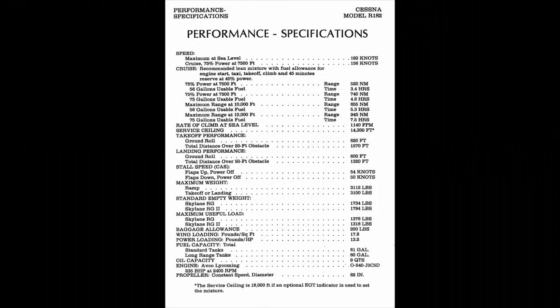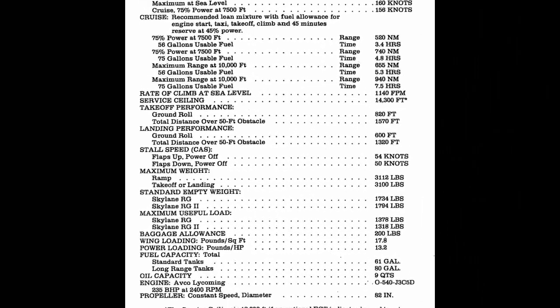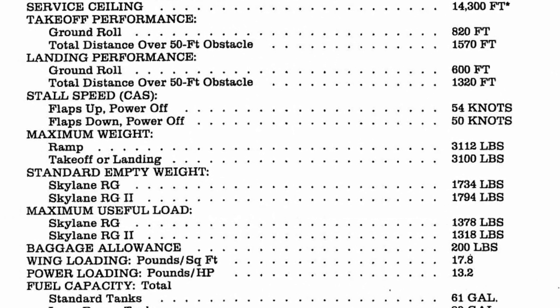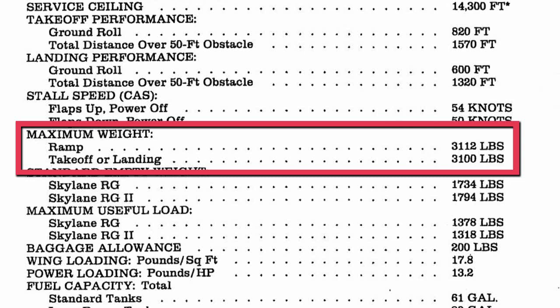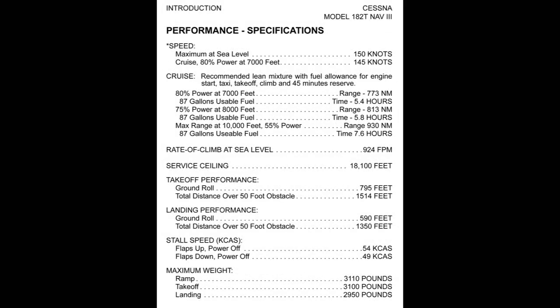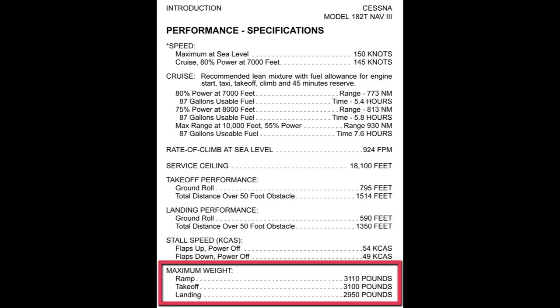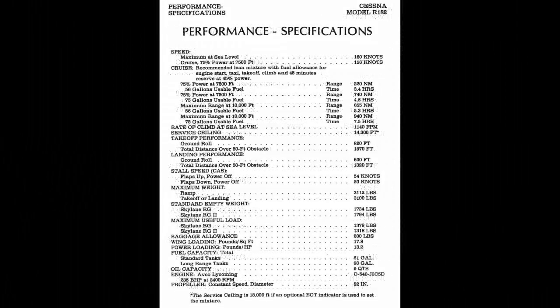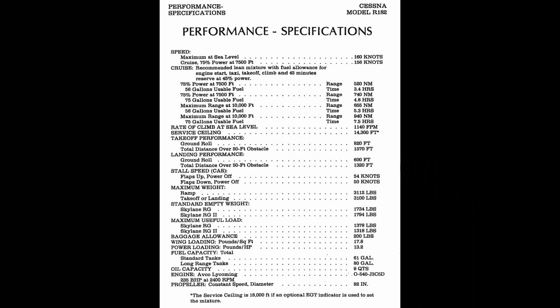One of the first few pages in the POH gives us the performance specifications. We're going to find out what the maximum takeoff weight is for the Cessna 182 RG. The maximum ramp weight is 3,112 pounds and the maximum takeoff or landing weight is 3,100 pounds. You have to be very careful — on some bigger airplanes the takeoff weight may be 3,100 pounds but the landing weight may be lower. For example, the T182 turbo Cessna has a takeoff weight of 3,100 pounds but a landing weight of 2,950 pounds. For the 1978 Cessna 182 RG, both the takeoff and landing weight are the same: 3,100 pounds.